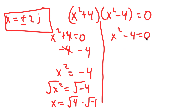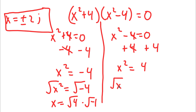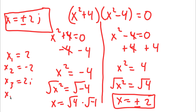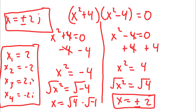For x squared minus 4 equals 0, I'm going to add 4 on both sides. These two cancel out and I have x squared is equal to 4. Taking the square root on both sides, the square root of x squared is x, and the square root of 4 is equal to positive or negative 2. So my four solutions are x equals 2, x equals negative 2, x equals 2i, and x equals negative 2i.